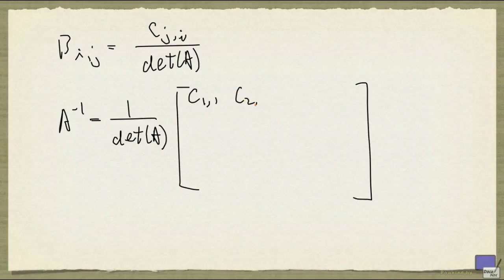So C11, C21, and so on up to Cn1 in the first row. And the second one will be C12, C22, and C32, and so on.